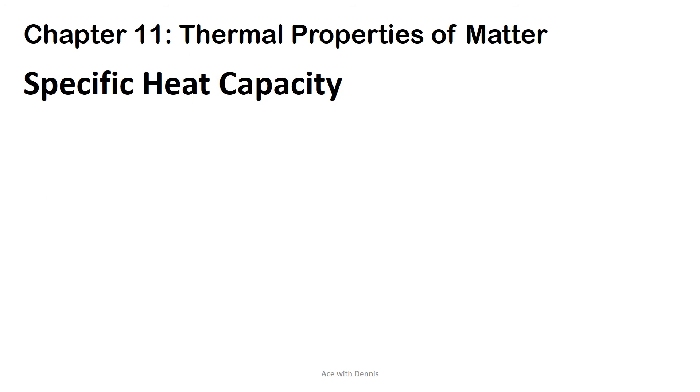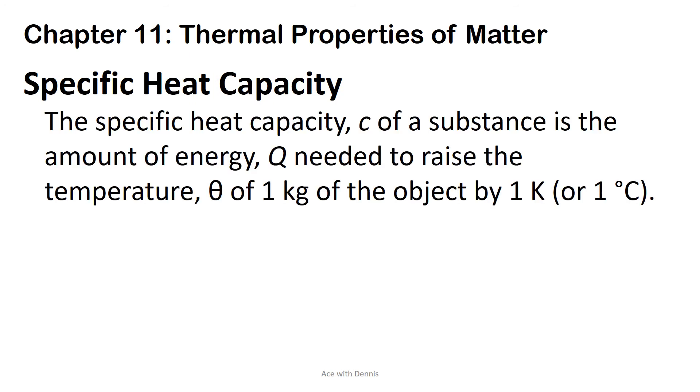Specific heat capacity. The specific heat capacity c of a substance is the amount of energy Q needed to raise the temperature of one kilogram of the substance by one Kelvin or one degree Celsius. Its formula is c equals Q over m delta theta.